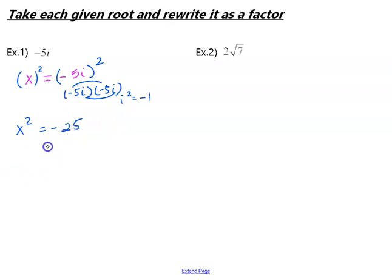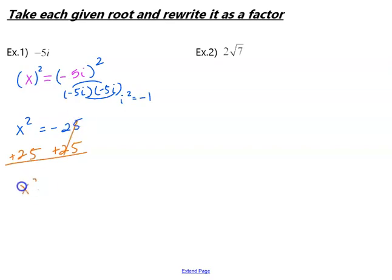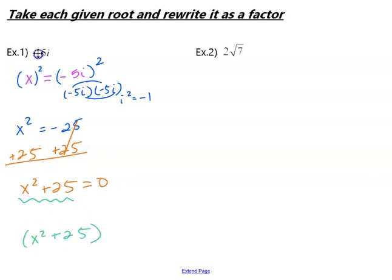The next step is to get this equation equal to 0, and as always we want to keep x squared positive. So let's add 25 to the other side. So then we get x squared plus 25 equals 0. And our last step: take the expression side and put it in parentheses. So here is negative 5i written as a factor instead of a root.